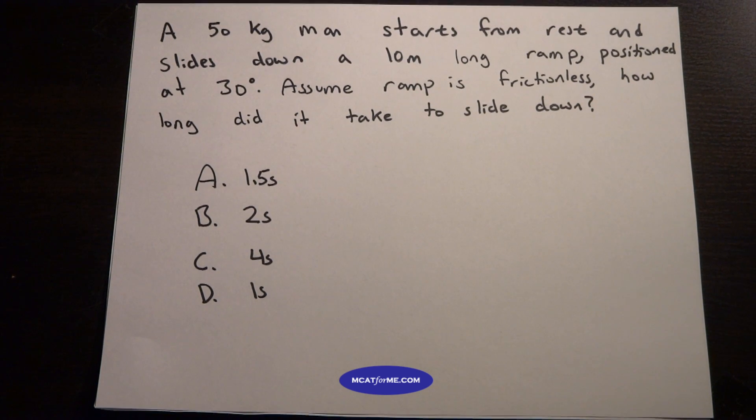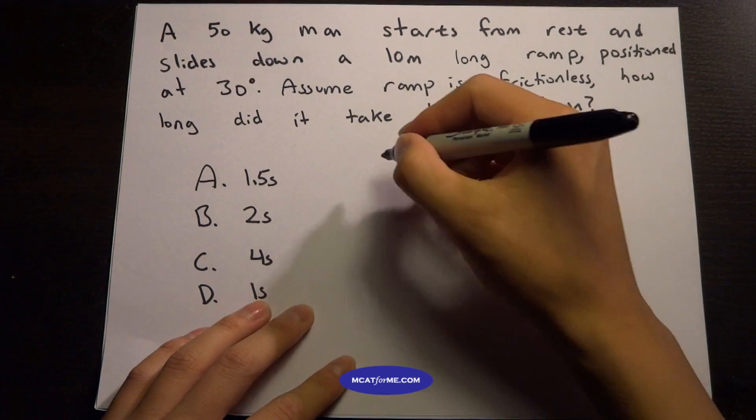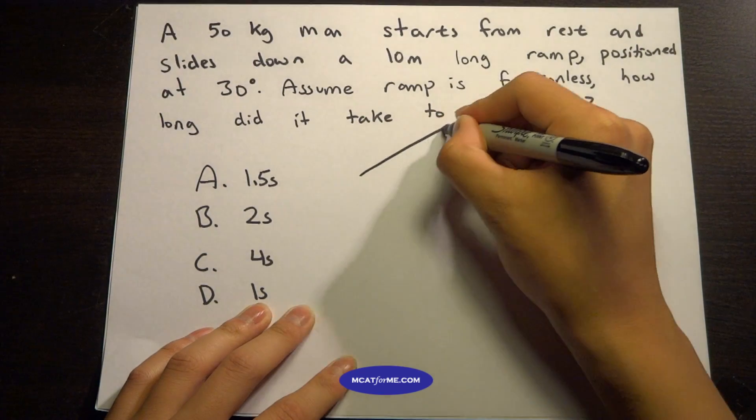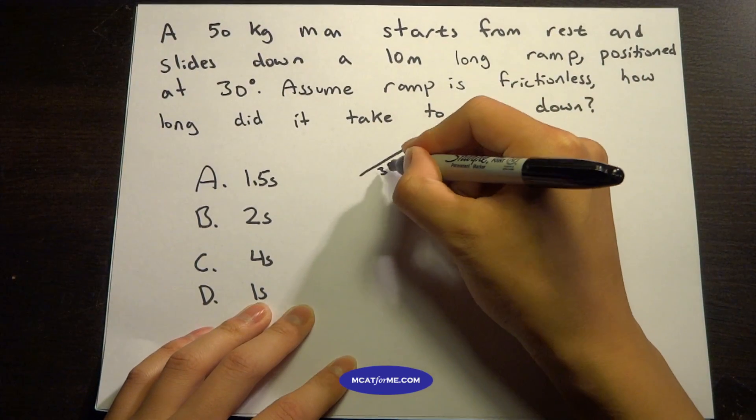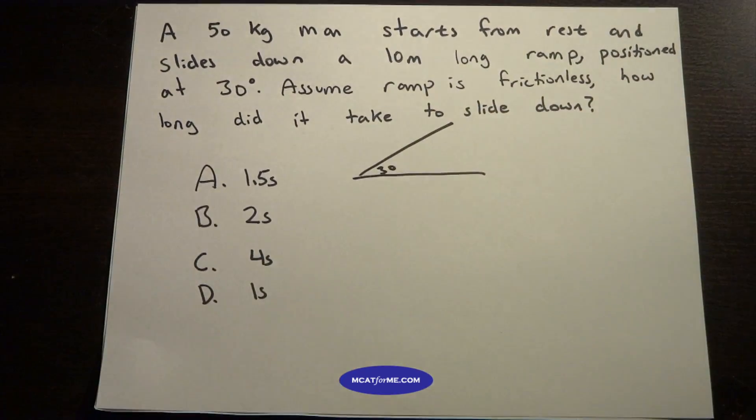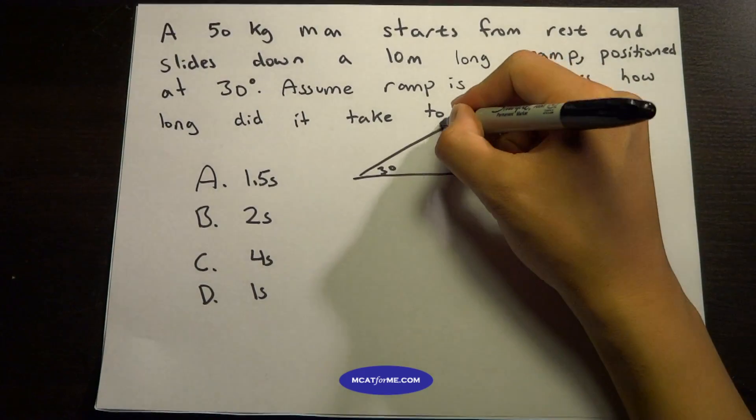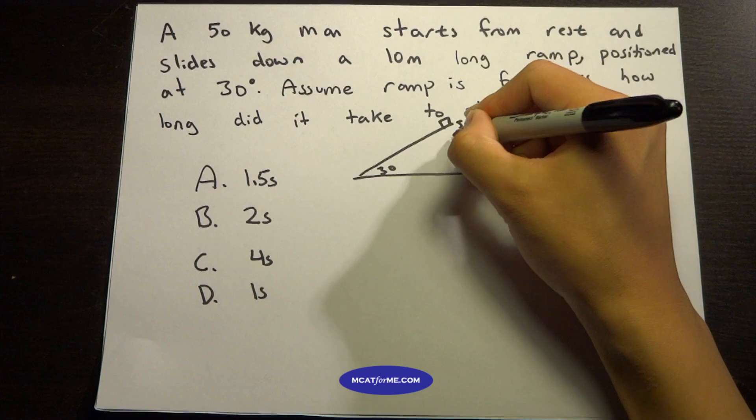All right, so the first thing we want to do when dealing with these problems is piece together what do we know. The easiest way to do this is to draw a picture. So we have this ramp that's 30 degrees, and we have this man who's 50 kilograms.